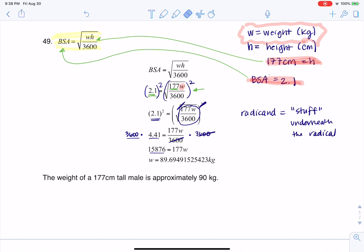The next thing I want to do is I want to divide both sides by 177. And when I divide both sides by 177, these are going to cancel. And when I crunch that number on my calculator, I get to 89.69. You can see it repeats that way.